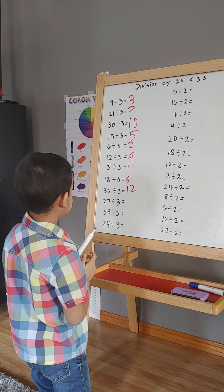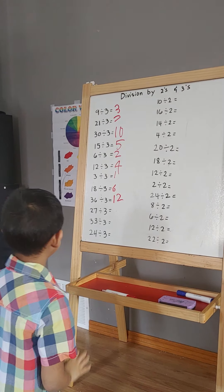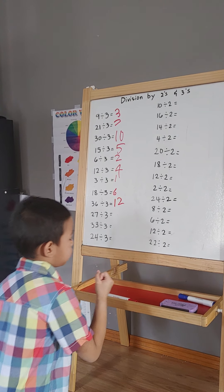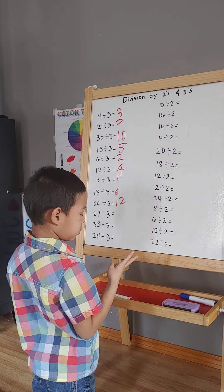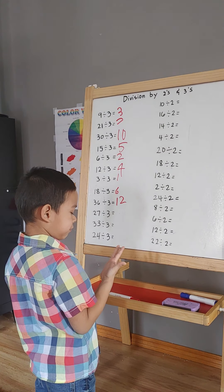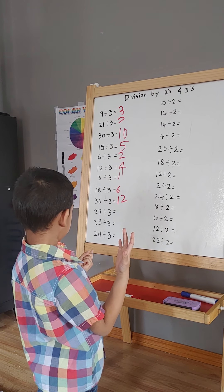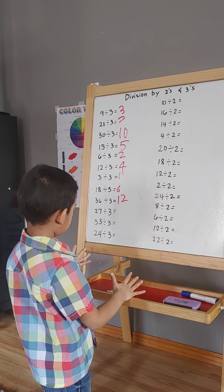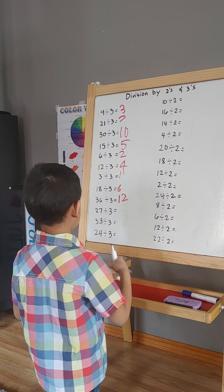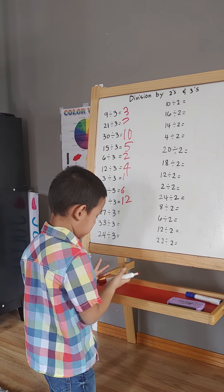Okay, 6 divided by 3. 3, 6, 9, 12, 15, 18, 21, 24, 27, 30. So it is 9. Okay.